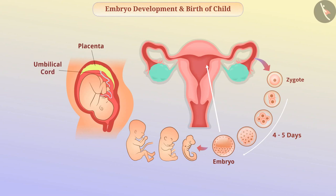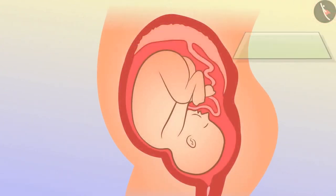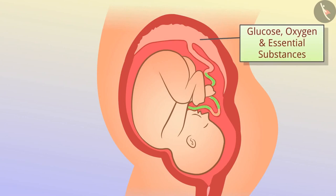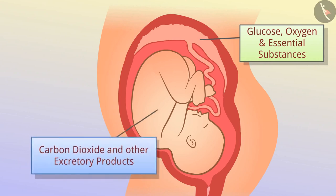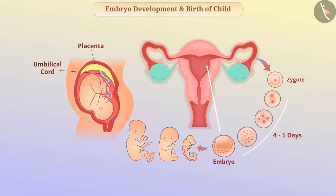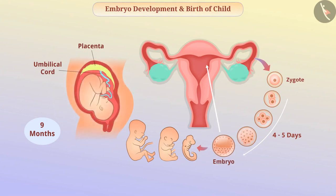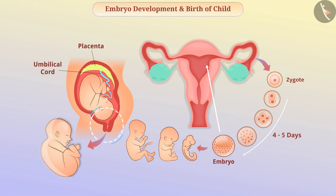With the help of the umbilical cord, the placenta supplies glucose, oxygen, and essential substances to the fetus. Similarly, it removes carbon dioxide and other excretory products produced by the fetus. In about 9 months after pregnancy, the fetus is fully developed and ready for delivery. During delivery, there is rhythmic contraction of the uterine muscles that leads to the birth of an infant.